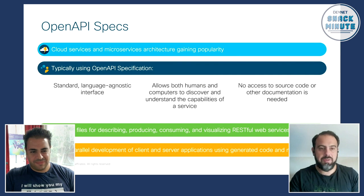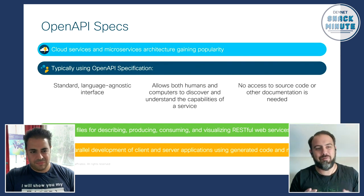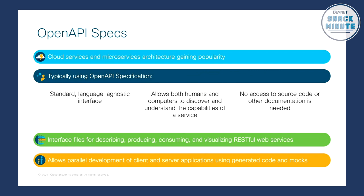For those of you that have been introduced to OpenAPI spec — and for those that haven't — it's becoming the de facto way for us to document and build APIs. It used to be called Swagger, and it's become more formalized around the term OpenAPI spec. It's really just a way for us to document and then build APIs. Ultimately, the industry is moving toward cloud services and microservices architectures, and to build those things we're typically using an OpenAPI specification. This allows us to standardize on how we build and talk about APIs so that both humans and computers can understand the capabilities of a service.